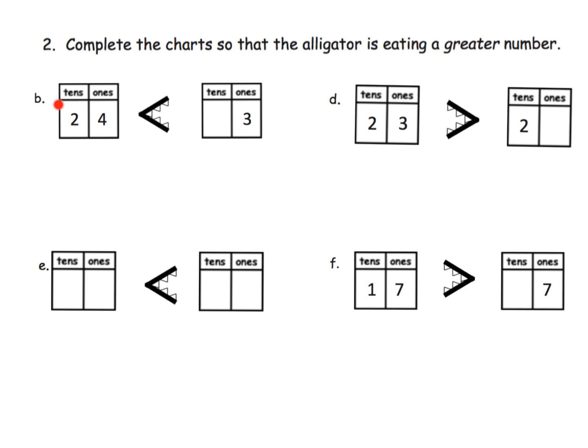For example this one right here, you've got two tens and four ones so we have the number 24. It's supposed to be less than because the alligator is eating this number, the larger number. So 24 is less than this number.